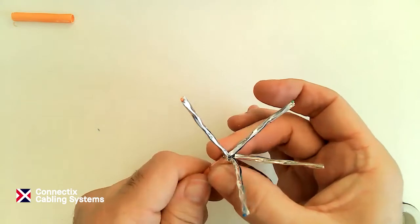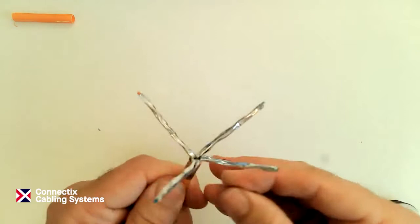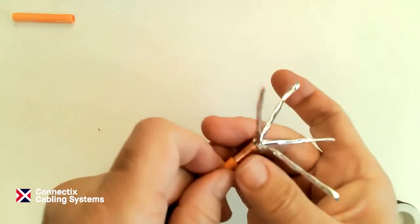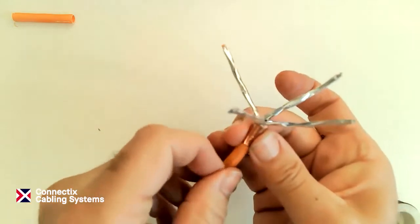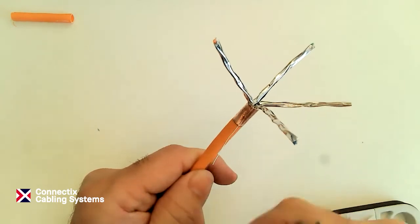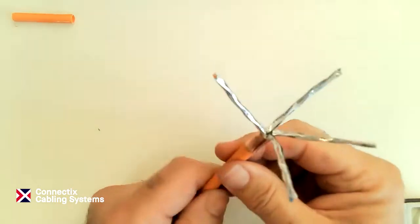But then I'm going to wrap the tape around so that we sandwich the drain wire inside the copper. So we've got the copper against the sheath and the drain wire is sandwiched between two layers of copper. Then I'm going to chop off the excess drain wire. That's that part sorted.